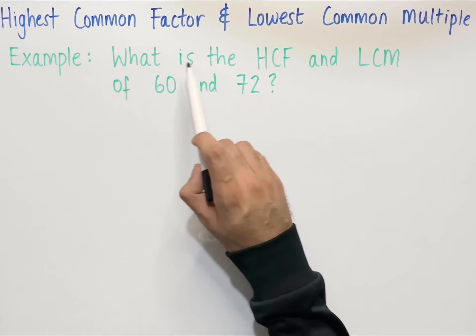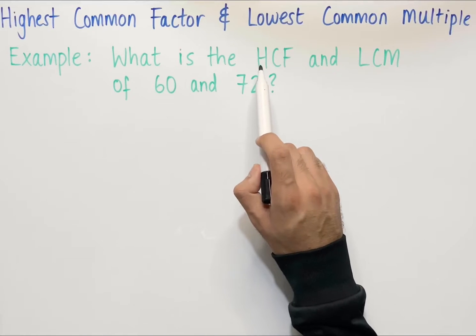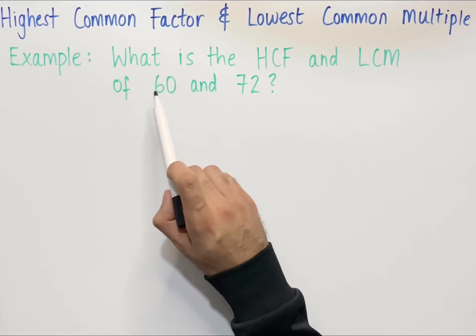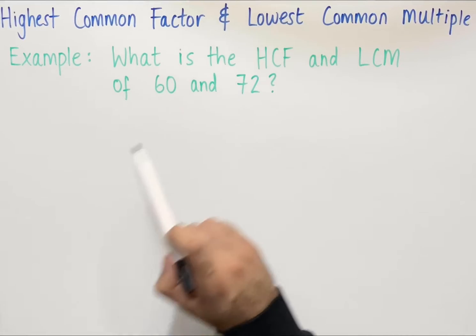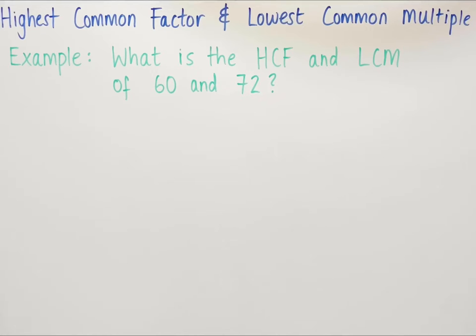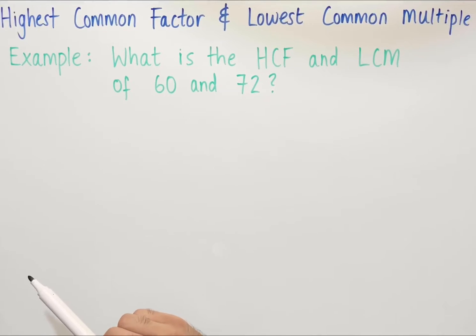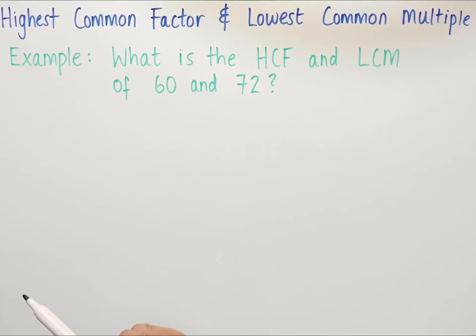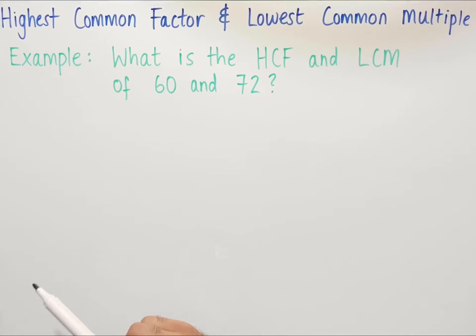The example asks: what is the highest common factor and lowest common multiple of 60 and 72? The highest common factor of 60 and 72 is the largest number that both 60 and 72 are divisible by. The lowest common multiple is the smallest number that is in both the 60 and 72 times tables.